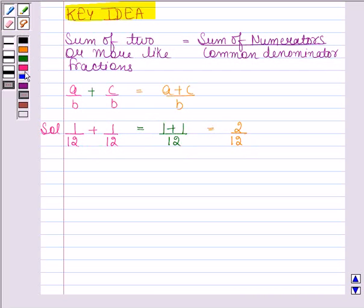Now 12 can be written as 2 into 6. Cancelling 2 from both numerator and denominator, we are left with 1 by 6.